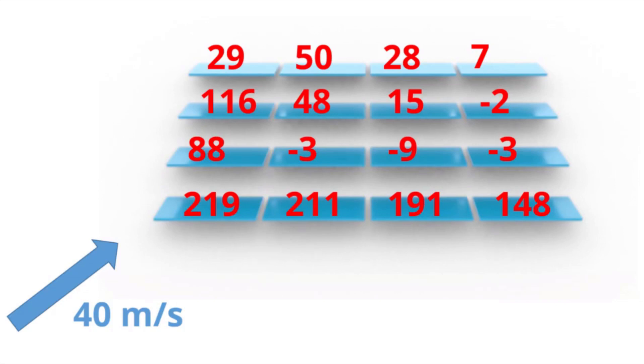Also, the lift that we see on the front row panels decreases rapidly as we move away from the corner. Still, the values are way too high to compensate by ballast. This would crash the roof.